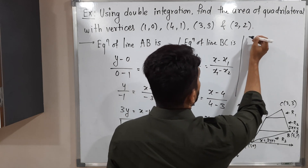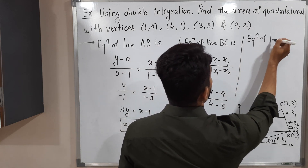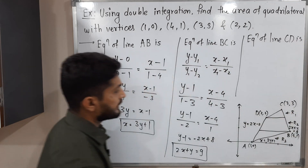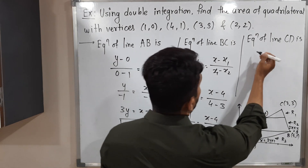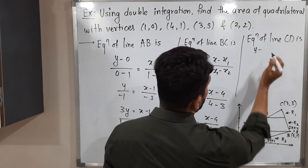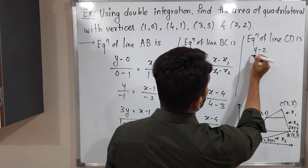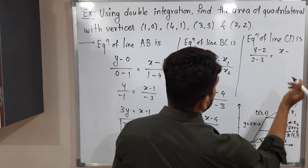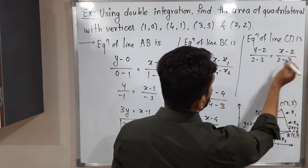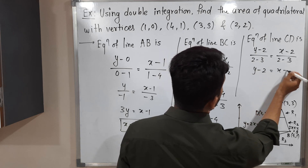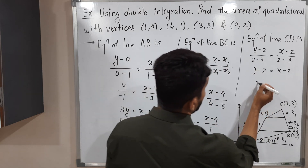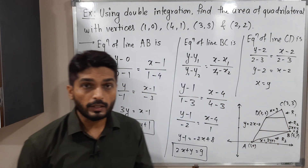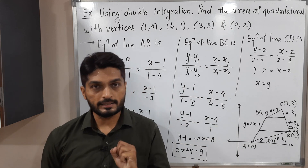For line CD, using points C(3, 3) and D(2, 2): substituting into the formula gives (y − 2)/(2 − 3) = (x − 2)/(2 − 3), which simplifies to y − 2 = x − 2, so x = y. The equations of all four lines are now found.